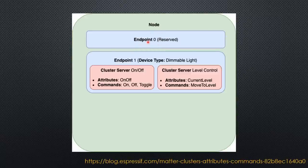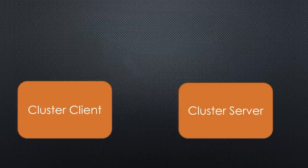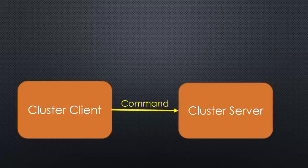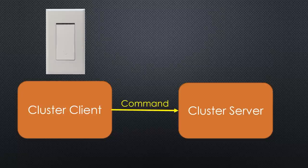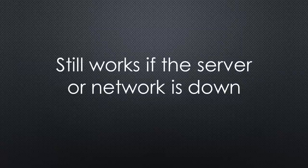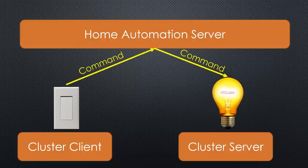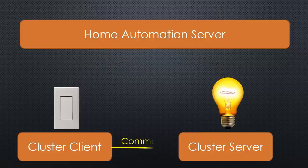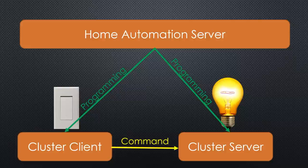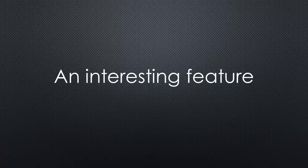Endpoint zero contains administrative information like the software level. Because Matter works on the application layer, endpoints can also offer cluster clients to issue commands to cluster servers. So it is possible to send commands directly from a Matter switch to a Matter bulb — an exciting feature if our overall server or the Wi-Fi is down. This is not how things run today, where our home automation software does all the dispatching, so it will need a lot of redesign. Ultimately, your automation script must be shifted down to the distributed systems.